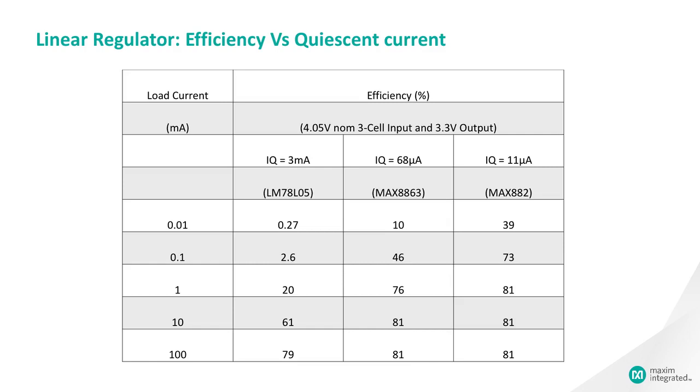This table shows how quiescent currents affect efficiency for three devices: a common low-power regulator often used in AC line-powered designs, the LM78L05, and two regulators optimized for low operating current, the MAX8863 and MAX882.